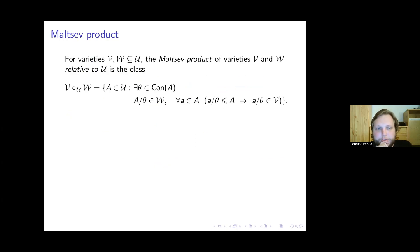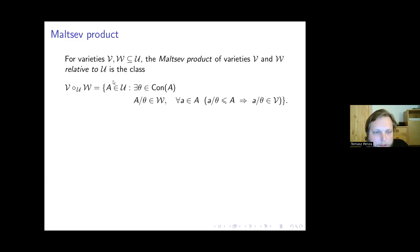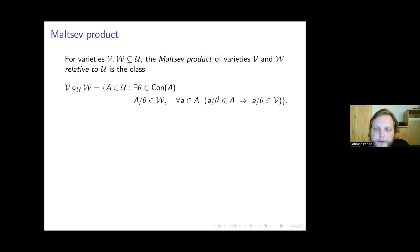I will start with the definition of Malcev products. If we have varieties V, W, and U such that V and W are some varieties of U, then the Malcev product of these varieties V and W relative to U is the class of all algebras A that belong to U, that have a congruence theta such that the quotient algebra belongs to W, and every congruence class of theta which is a subalgebra of A belongs to V.